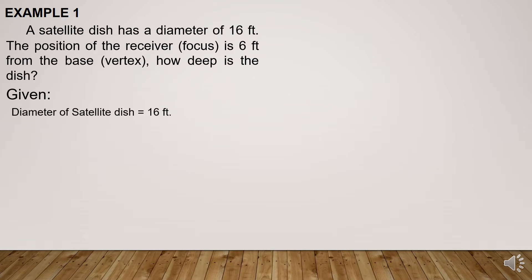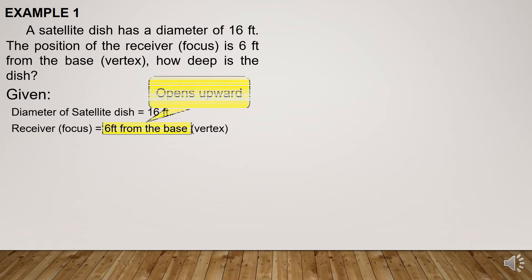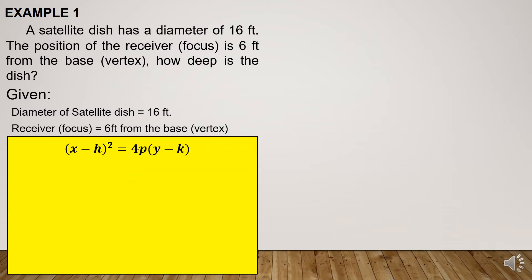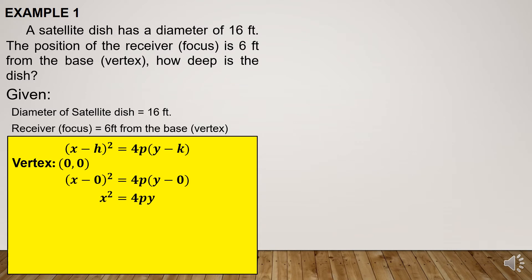Given: the diameter of the satellite dish is 16 feet. The receiver, which is the focus, is 6 feet from the base, which is the vertex. You can observe that the focus is above the vertex, so the parabola opens upward. Therefore, we will use this equation with the vertex at the point of origin. Substituting the values of h and k, we obtain x squared is equal to 4py. From the given, the focus is 6 feet from the base, so the value of p is 6.